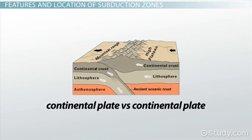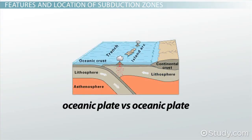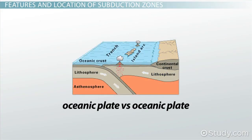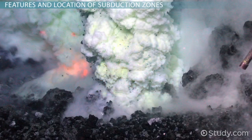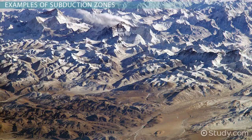When two continental plates meet, the main feature that results is mountains. The Himalayas, the biggest mountain range in the world, were formed this way. Two oceanic plates collide to create large underwater trenches. The temperature and pressure can be so intense that it liquefies part of the crust, and this liquid rises up to create underwater volcanoes. These underwater volcanoes can form islands over long periods of time.